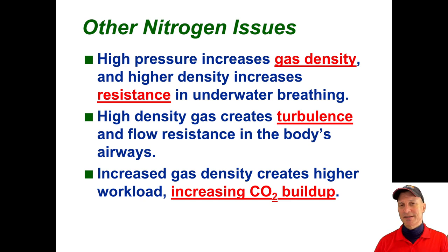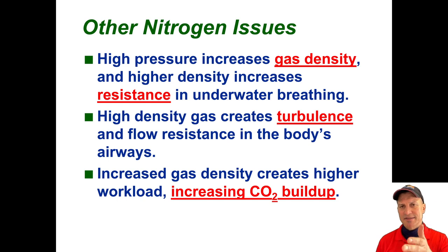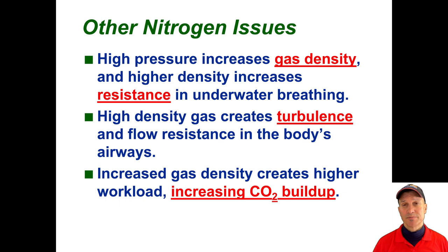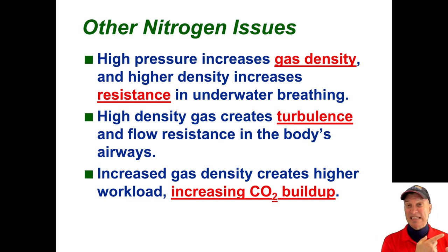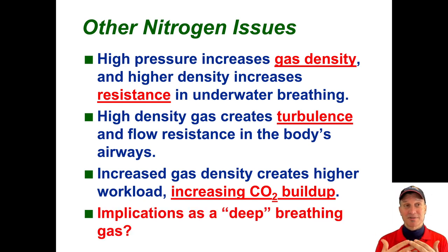Nitrogen, when it gets beyond a certain density, starts to increase your work of breathing and makes your body produce more CO2 because you're working harder just to breathe. It has a lot of turbulence, which does the same thing. Because of that, it contributes to increased CO2 buildup at depth — not a nice thing. So you have nitrogen at depth causing narcosis, and we've already seen that CO2 contributes with nitrogen to narcosis. You have a really bad situation brewing.